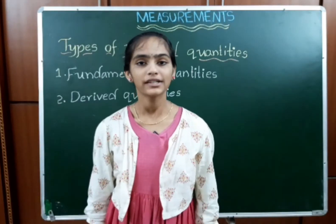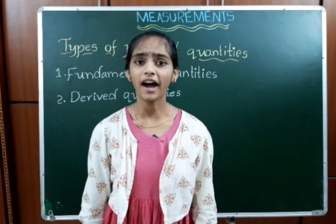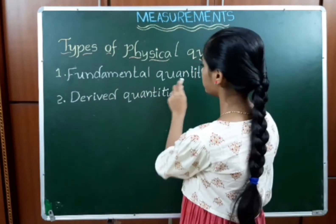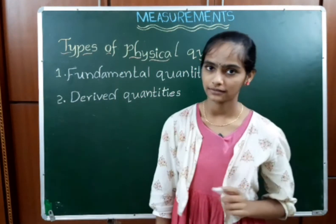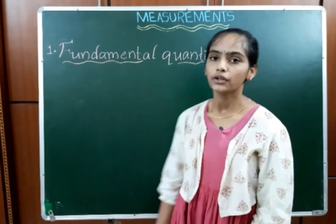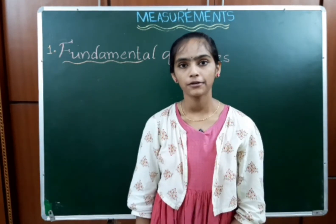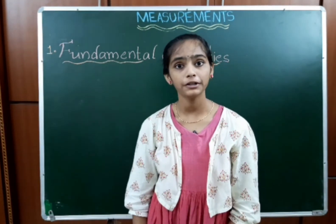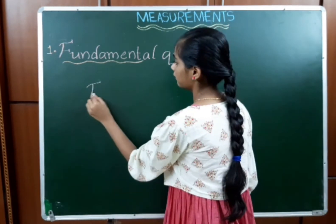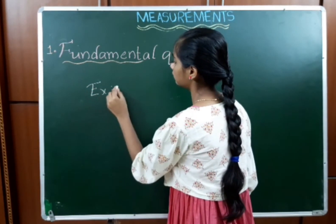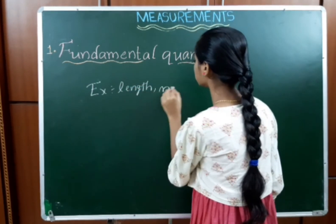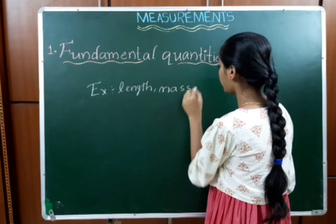Our next topic is types of physical quantities. There are two types of physical quantities: fundamental quantities and derived quantities. The quantities which are independent of other physical quantities are known as fundamental quantities. Examples are length, mass, and time.